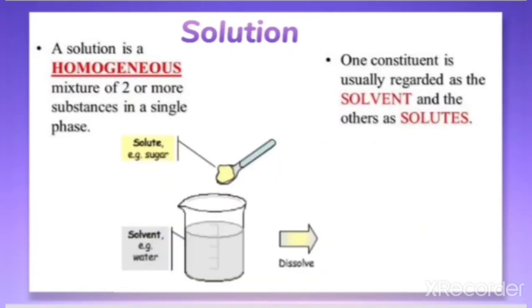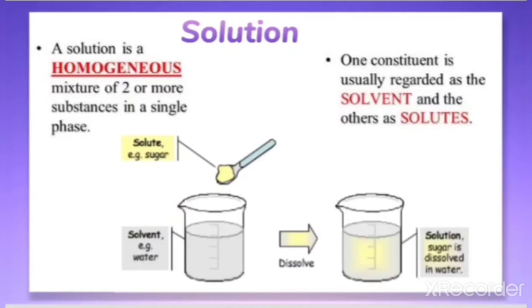As an example of preparing a solution: sugar, which is the solute, is dissolved in water, which is the solvent. The two components are sugar and water, where sugar is the solute and water is the solvent. When the solute is dissolved in the solvent we get a sugar solution. Since the solution is prepared from two components, it is an example of a binary solution.